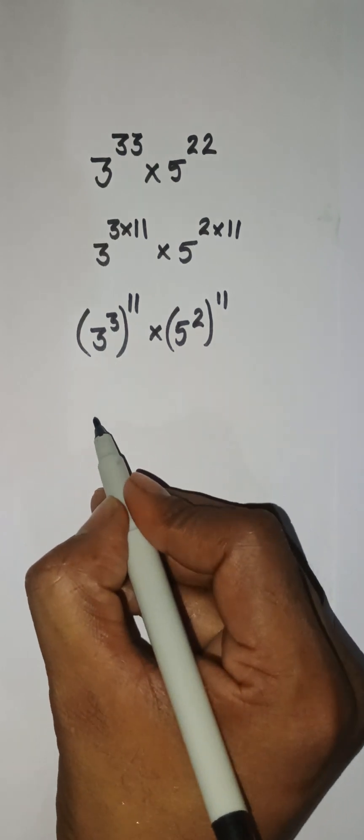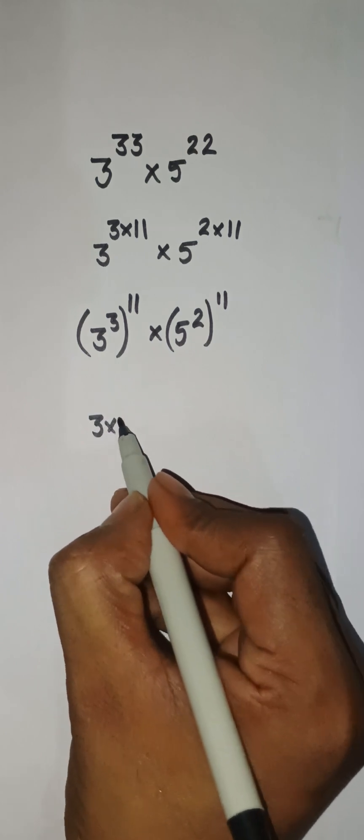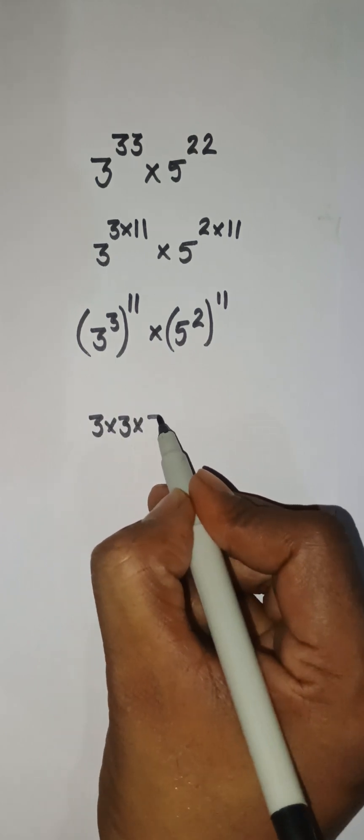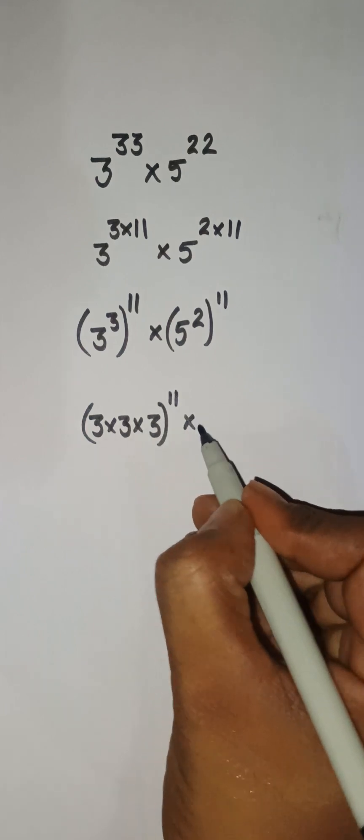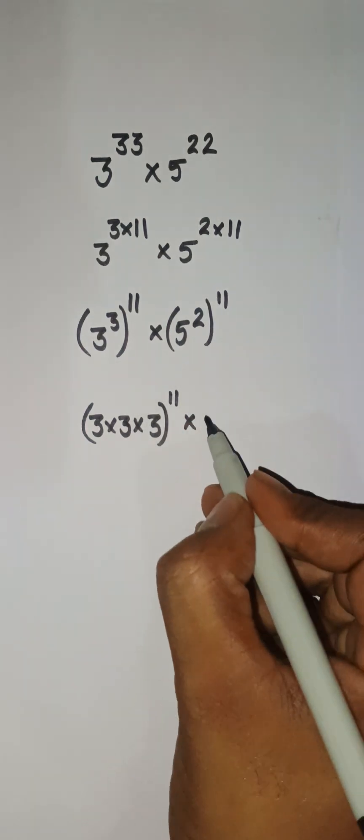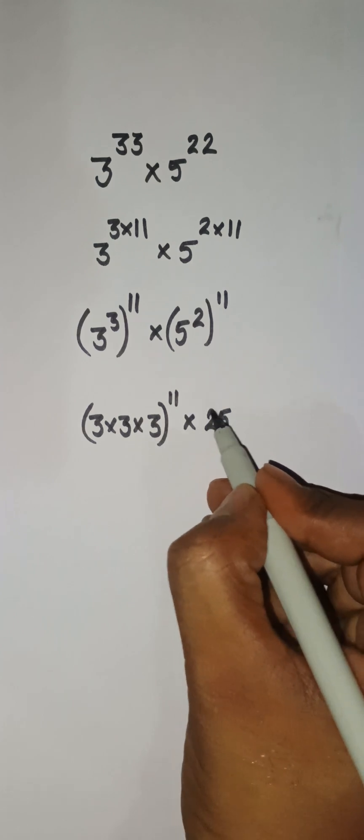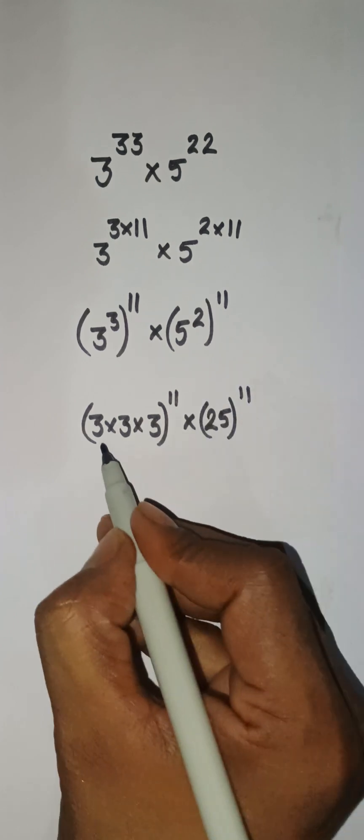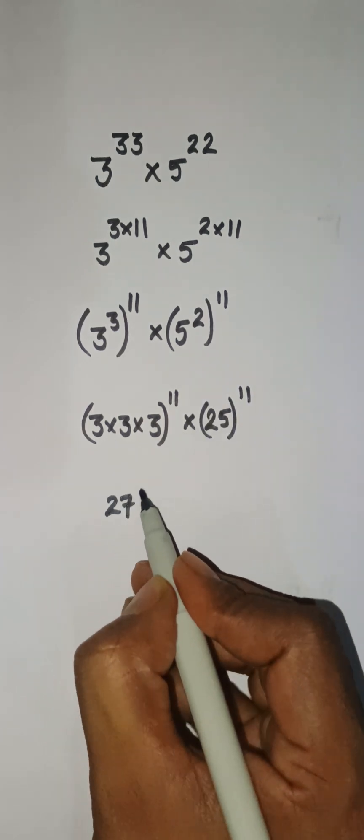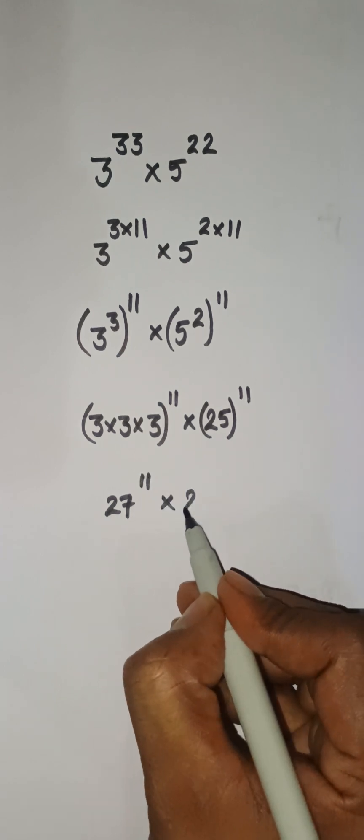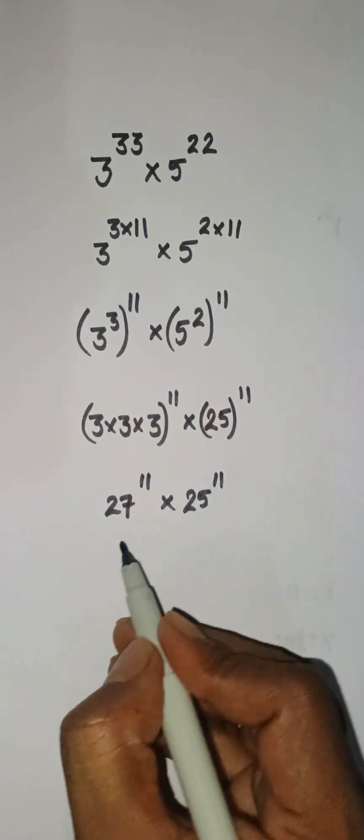3 to the power 3 is 3 times 3 times 3, and then there is a power of 11. And 5 to the power 2 can be written as 25 to the power 11. Now this will be 27 to the power 11 and here 25 to the power 11.